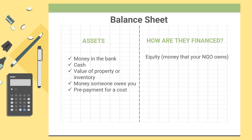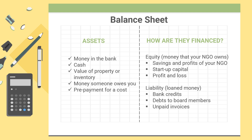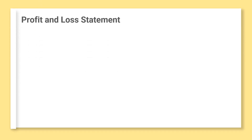On the credit side, you have listed how those assets are financed. Basically, they can be financed in two ways. Money that your NGO owns is called equity, and includes the savings or profits of your NGO from the previous years, but also the start-up capital or guaranteed capital that was paid in when you opened the NGO. The equity also includes the profit and loss from the current year. Your assets can also be financed by loaned money, called liability, which could include bank credits, debts to board members, unpaid invoices, or money that you know you will have to pay back to donors.